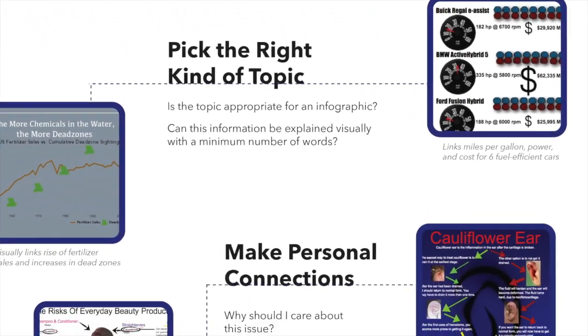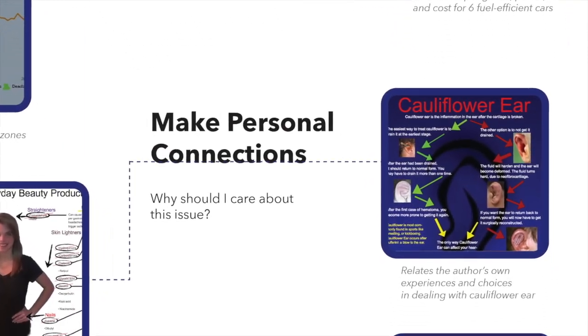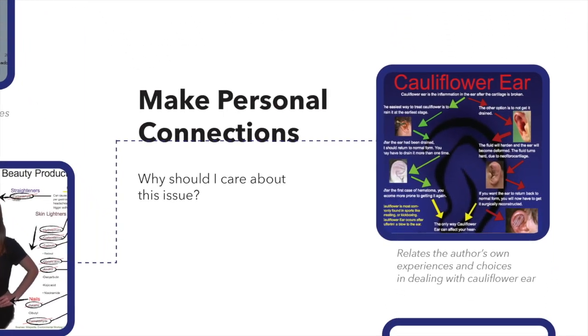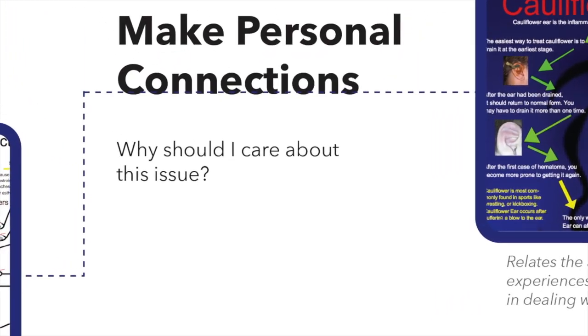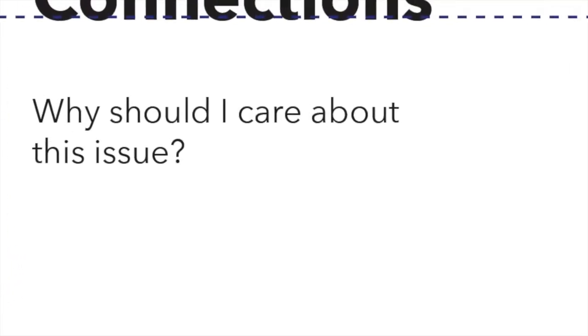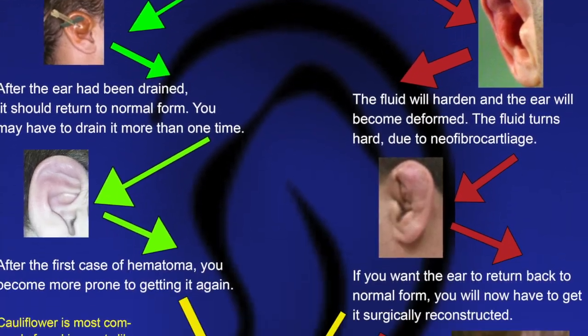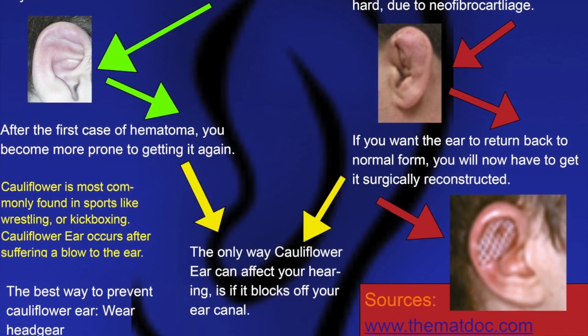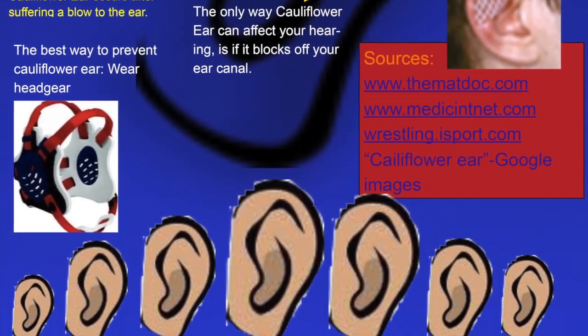The foundation of an effective infographic is to make personal connections. We want students to ask themselves, why should I care about this issue? In this infographic, a student explored his own experiences and choices in dealing with cauliflower ear, a wrestling-related injury.